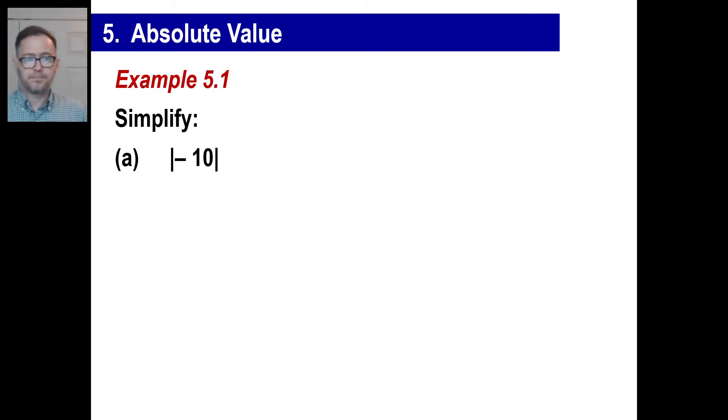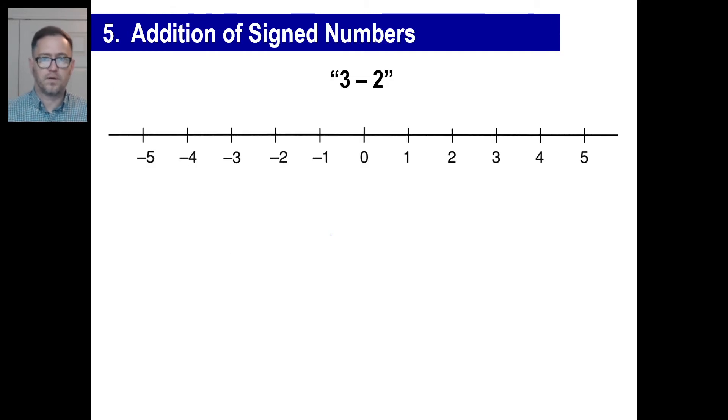So let's simplify these. The absolute value of negative 10 is 10, right? On a number line, you can visualize negative 10. How far away from 0 is negative 10? It's just 10 away. The absolute value of 13 minus 8. Well, 13 minus 8 is 5. So how far away from 0 is 5? 5. How about this one? The opposite of the absolute value of 12 minus 5. Well, 12 minus 5 is 7. The absolute value of 7 is 7. And the opposite of 7 is opposite 7, or negative 7, whatever you want to call it.